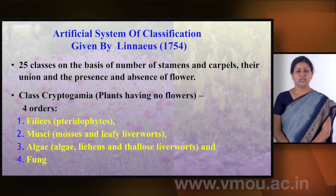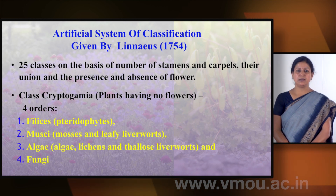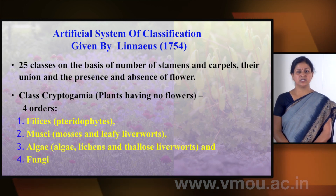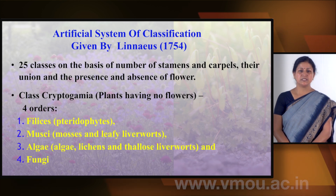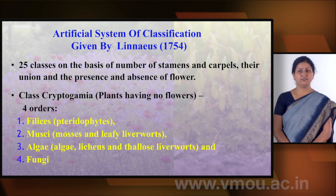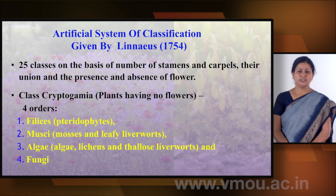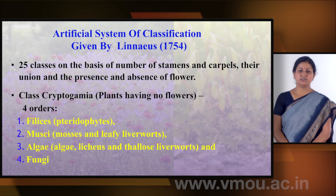One class is named Cryptogamia, which has four orders: Phylices, which are called pteridophytes; Musci, which are called mosses and leafy liverworts; Algae, which includes algae, lichens and thallose liverworts; and Fungi.